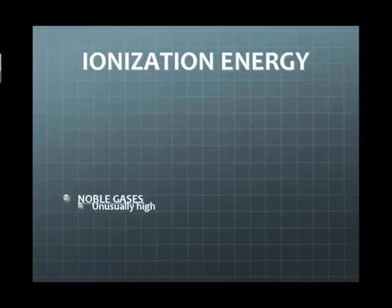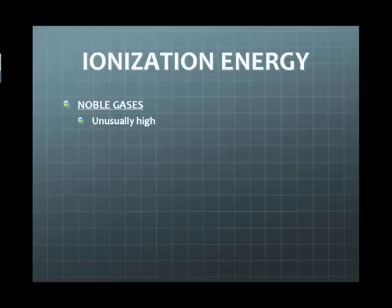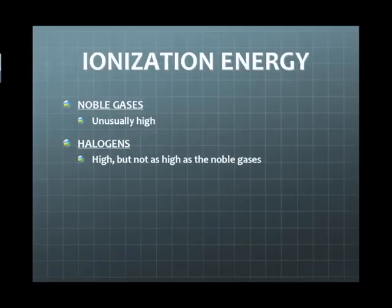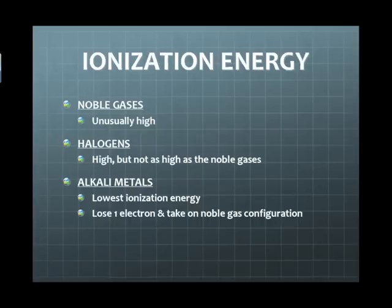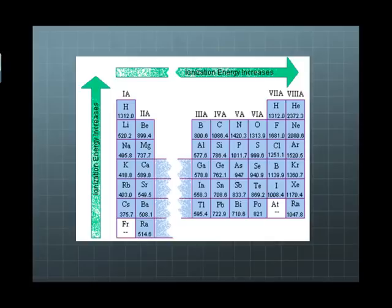When we look at trends within the periodic table, the noble gases tend to have really high ionization energy — the far right of the table. The greater number of protons within the nucleus makes it harder for an electron to be removed. The halogens, right next to the noble gases, have high ionization energy but not quite as high. The alkali metals on the far left have very low ionization energy because they have the fewest electrons in that period. A table shows ionization energies increasing from left to right, and decreasing from top to bottom — because the electron being removed is farther from the nucleus at the bottom of the table.